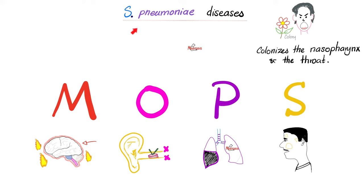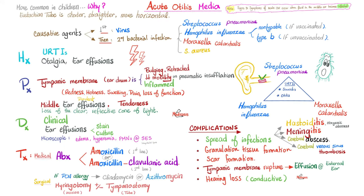Remember Streptococcus pneumoniae leads to MOPS: Meningitis, Otitis media, Pneumonia, and Sinusitis. Acute otitis media is more common in the young because their Eustachian tube is shorter, straighter, and more horizontal — making it easier for infections to spread from the upper respiratory tract into the middle ear.